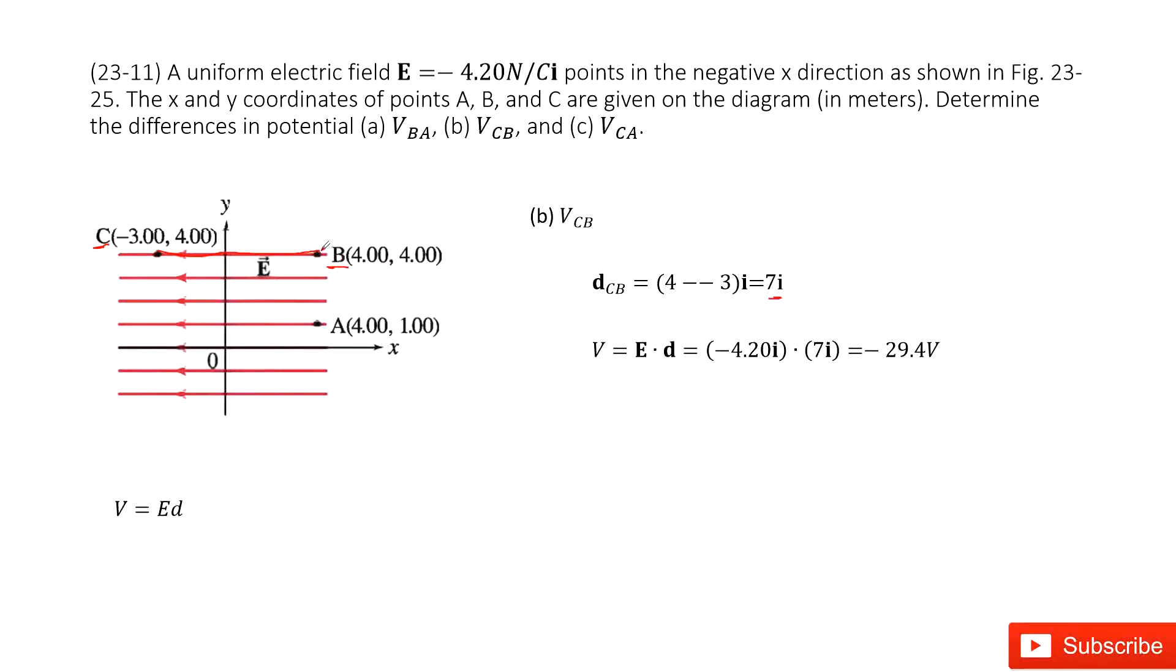Because the electric field lines travel from high potential to lower potential. In this case, if we want to find the potential C to B, it's just the negative.